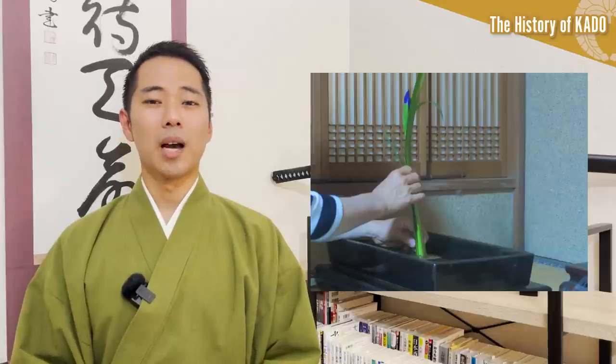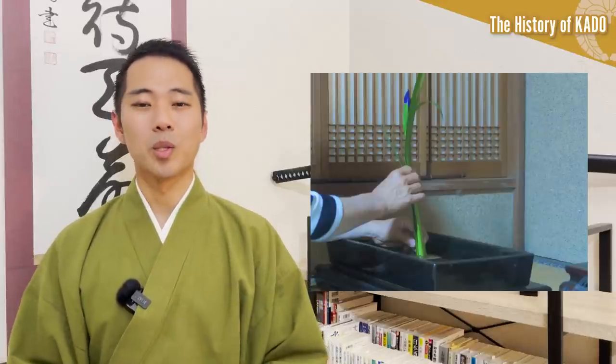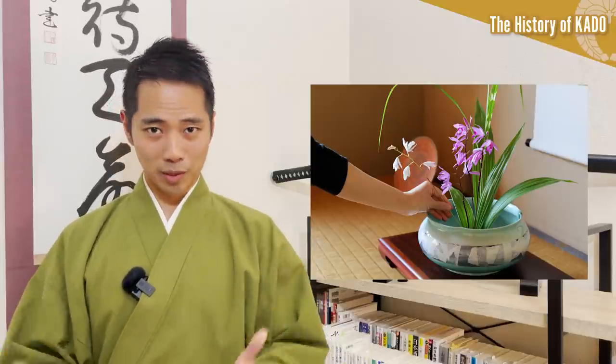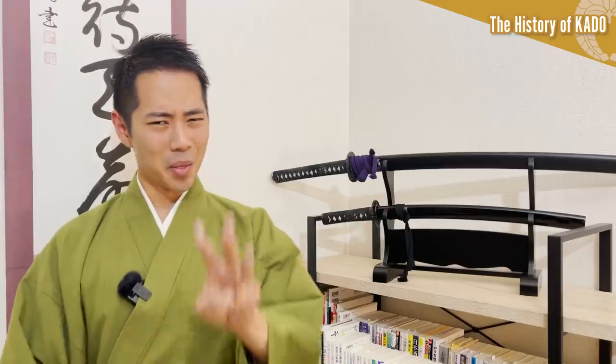Later, people who specialized in flowers began to increase, and flowers that had been part of the decorations gradually became objects of appreciation as independent works of art. Eventually, flowers began to be arranged in a formal way with a certain principle, and this was the beginning of kado. Currently, there are different ryūha styles of kado, just like budo martial arts, and each style has its own way of approaching flowers and life. Out of the 300 or more ryūha styles, let me introduce the 3 major ones.